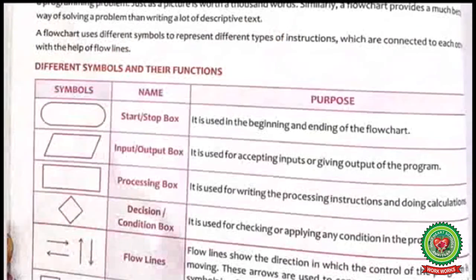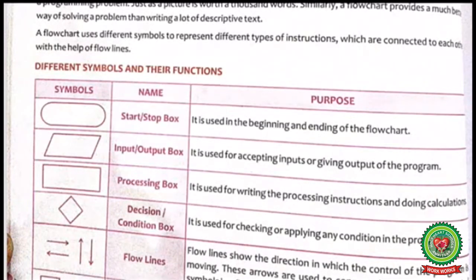In a flowchart, different symbols are used to represent different types of instructions. All the symbols are connected with each other with the help of flowlines. Here, different symbols and their functions are given.